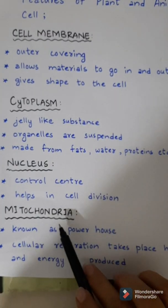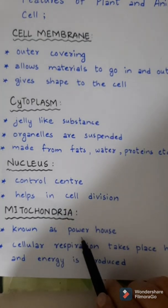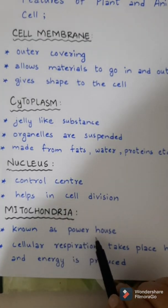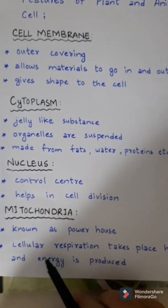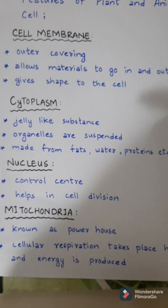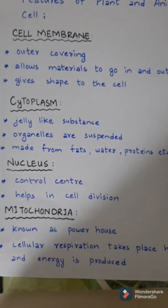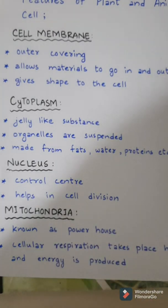Now, mitochondria. They are smaller parts of the cell known as the powerhouse of the cell. Why? Because cellular respiration — that is, intake of oxygen and giving out of carbon dioxide, and the combination of oxygen with food to release energy — takes place through the mitochondria.